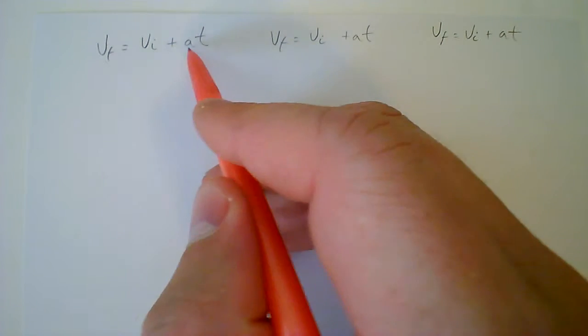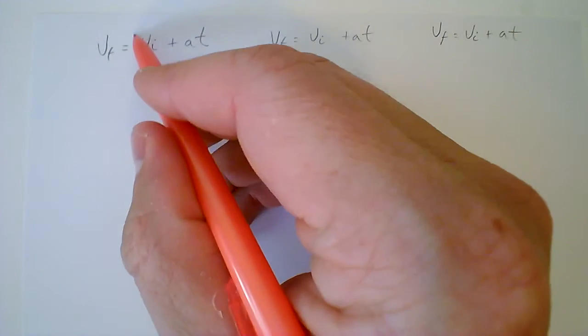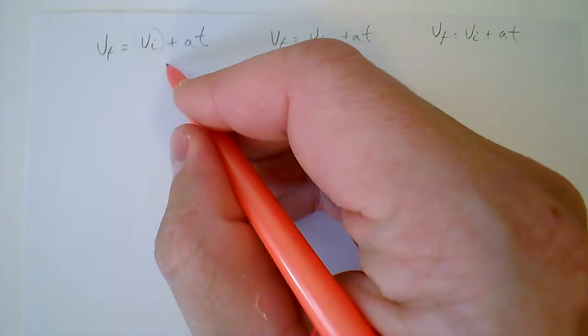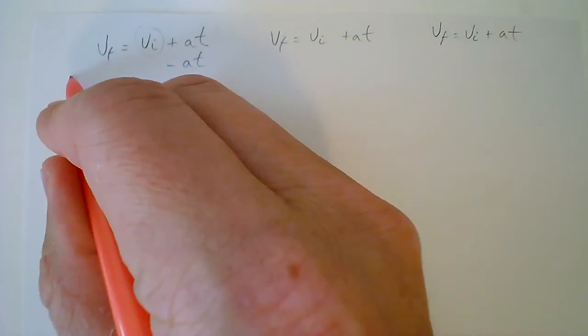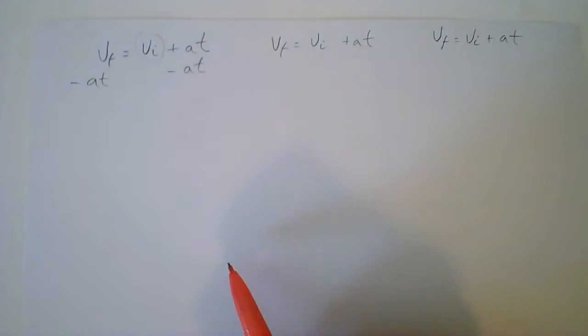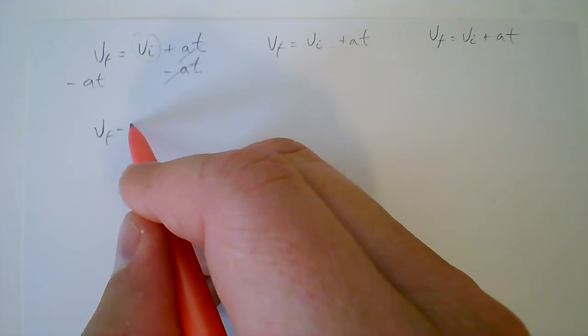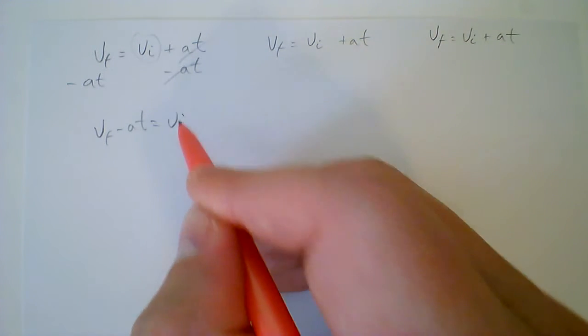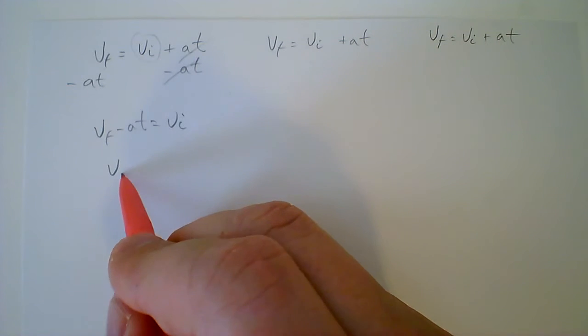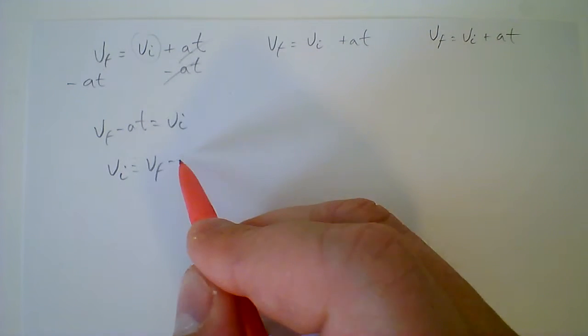In order to rearrange VF equals VI plus AT, if I'm trying to rearrange it for VI, all I have to do is subtract the AT from both sides. These cancel out, and I get VF minus AT equals VI, or better put, VI equals VF minus AT.